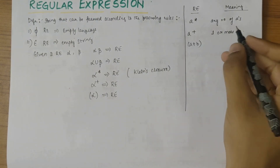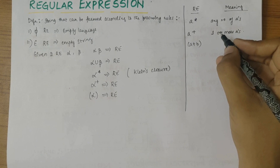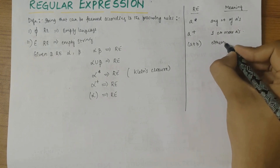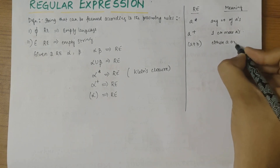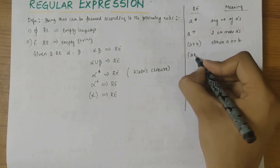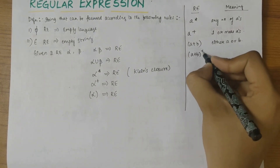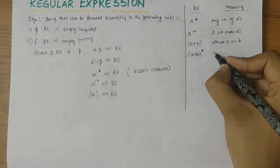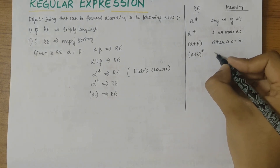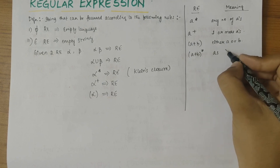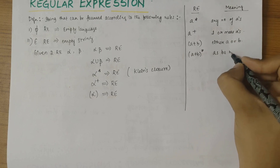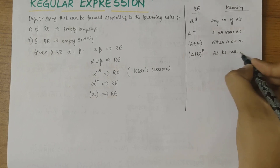If there is a-plus-b, we can say that the string consists of either a or b. If it's (a+b)-star, then the string comprises any number of a's and any number of b's — and in this there could be a null string as well.